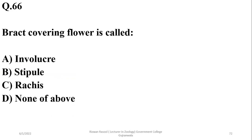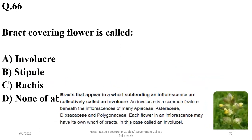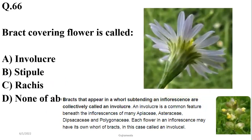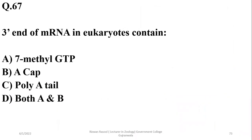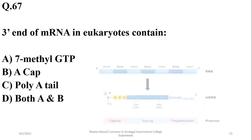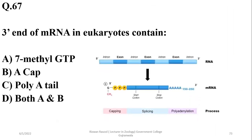Number 66. Bract covering a flower is termed as involucre. So the right option is alpha. Stipule is the leafy base of the leaf, while rachis is the portion of the stem bearing leaves. Number 67. The 3-prime end of messenger RNA contains a poly-A tail, while the 5-prime end is capped with 7-methyl GTP. So the right option is Charlie — poly-A tail.